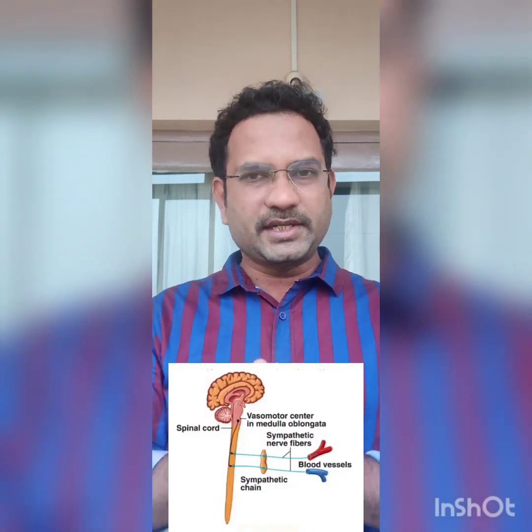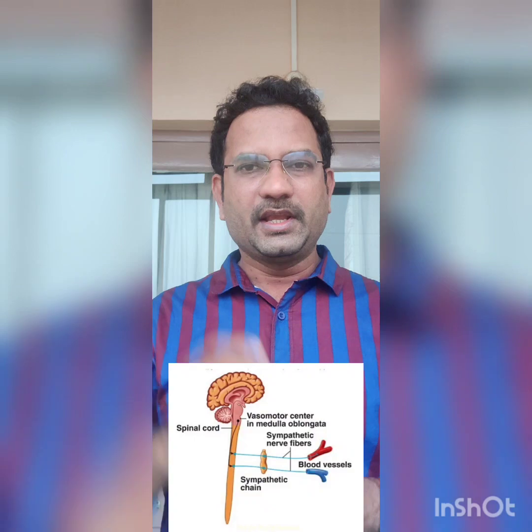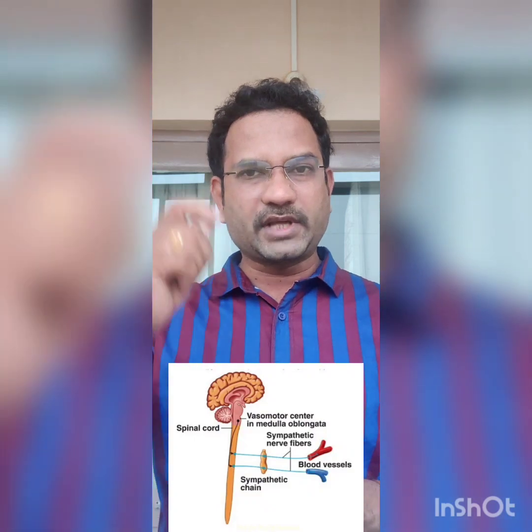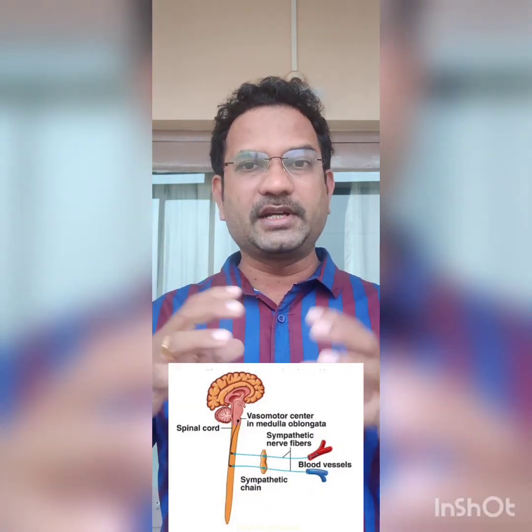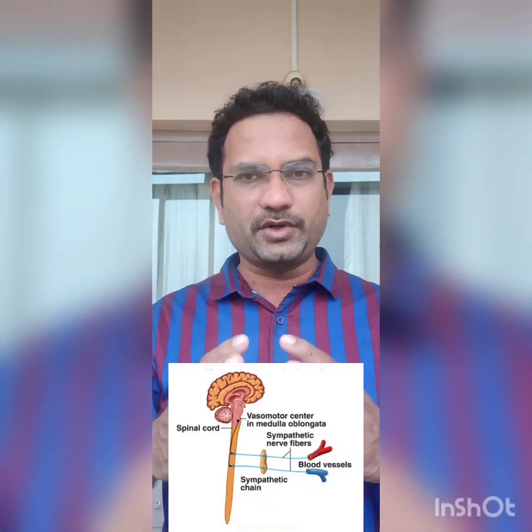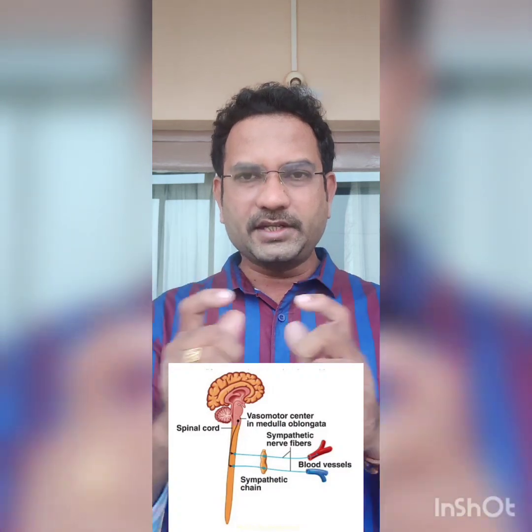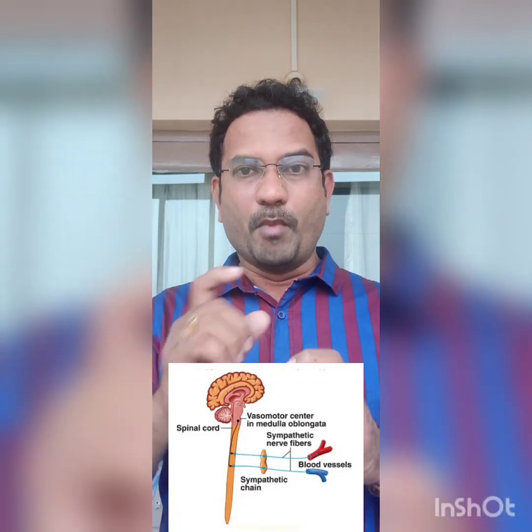First one: vasomotor center. This is a center which is present in our medulla oblongata. It coordinates with the cardiovascular center and respiratory center and collectively controls blood pressure. The word 'vaso' refers to blood vessels.